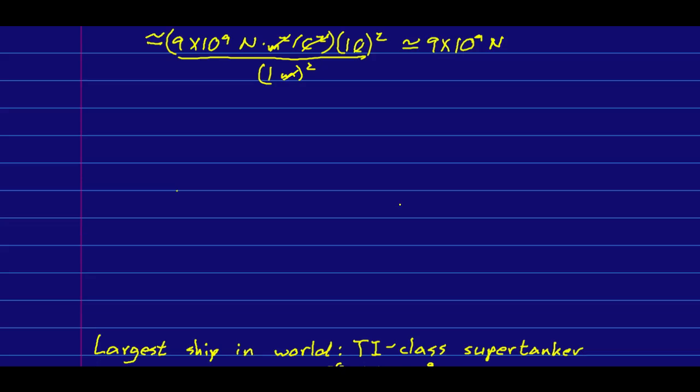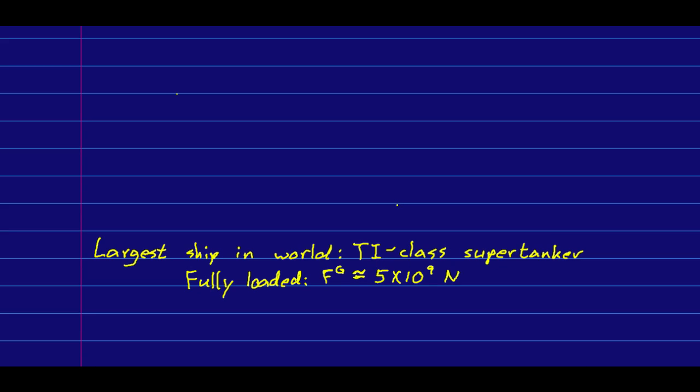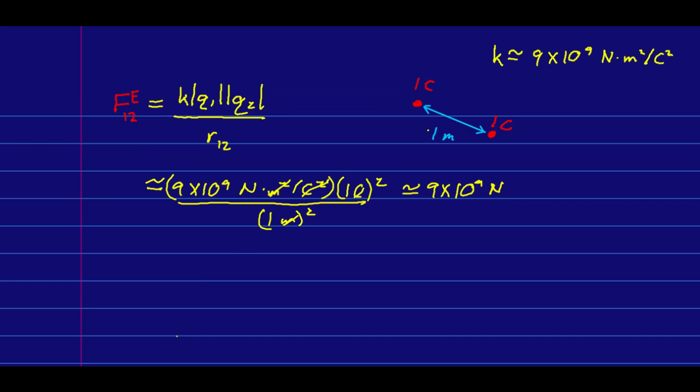Now to put that into perspective, the largest ship in the world is the TI class supertanker, and the gravitational force on a fully loaded TI class supertanker is about 5 times 10 to the 9 newtons. So a stack of two fully loaded TI class supertankers would have a gravitational force on it that is about the same as the electrical force on two one Coulomb charges separated by a meter. What this tells you is that a Coulomb is a huge unit of charge. If you ever meet a one Coulomb charge, my advice is run.